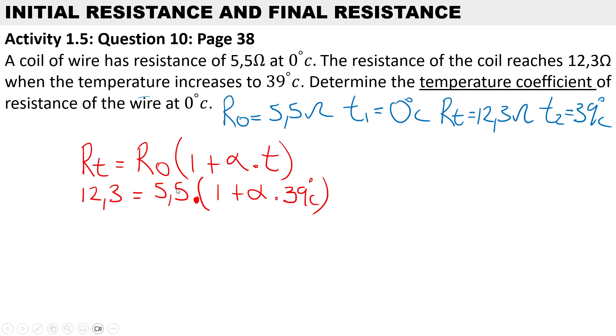take 5.5 across we need to divide. So 12.3 divided by 5.5 will give us 2.236. And then we can open up the bracket. We have 1 plus the temperature coefficient α multiplied by the temperature.